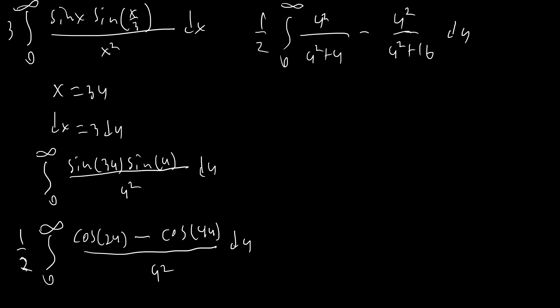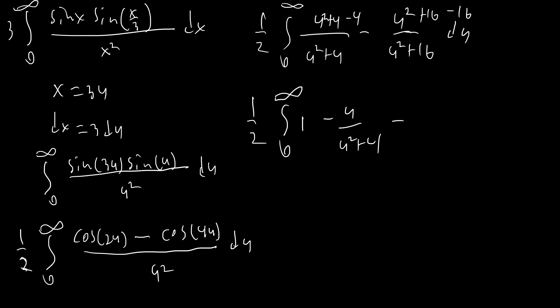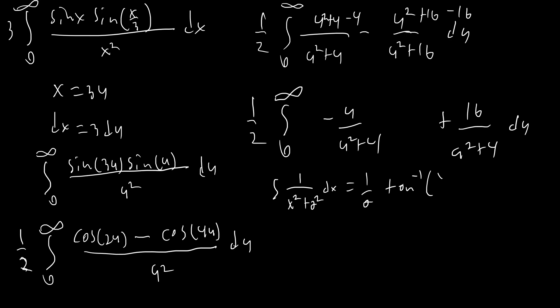To finish this integral we add and subtract 4 and add and subtract 16. We get one half times the integral from zero to infinity, where (u²+4)/(u²+4) = 1, leaving minus 4/(u²+4) minus 1 plus 16/(u²+16). The 1's cancel, and we use the arctangent formula: the integral of 1/(x²+a²) dx = (1/a)·arctan(x/a).